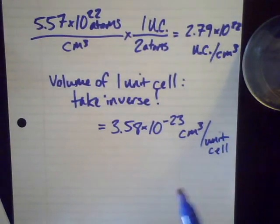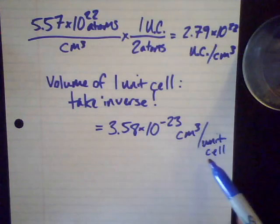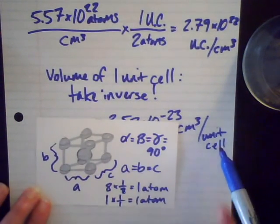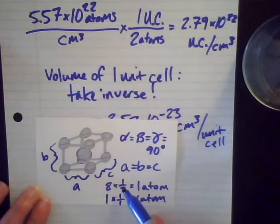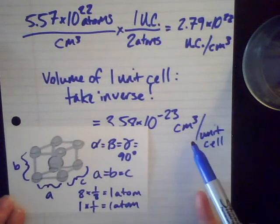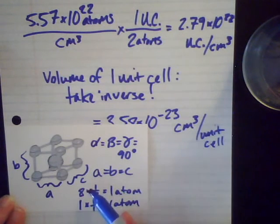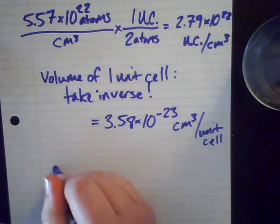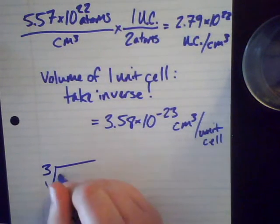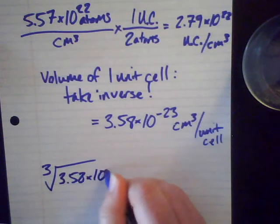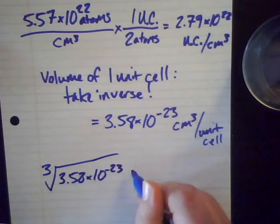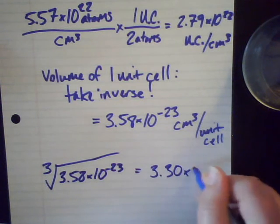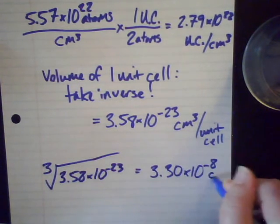Is everyone with me on that? So just to get one of these legs, in order to find the volume of the unit cell, it'd be A times B times C, which would give me an answer in centimeters cubed. So to just find one of these, all I have to do is take the cube root of this answer.